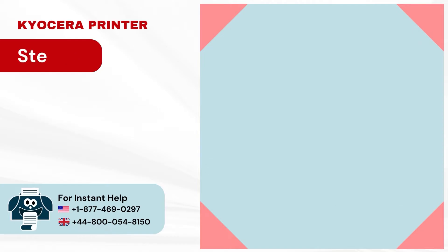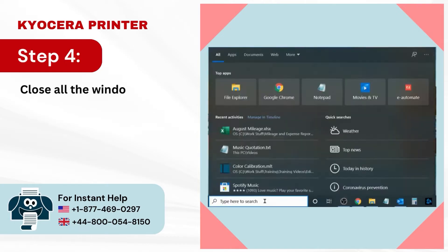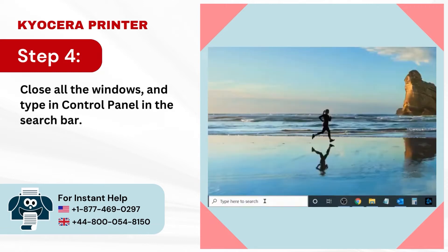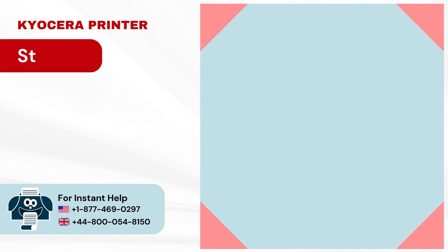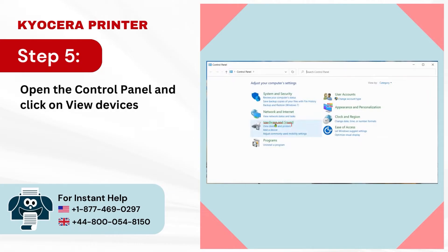Step 4: Close all the windows and type Control Panel in the search bar. Step 5: Open the Control Panel and click on View Devices and Printers under Hardware and Sound.